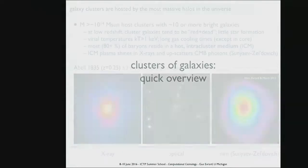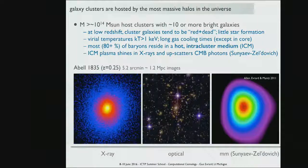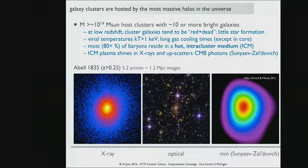A brief overview of clusters. This set of images is from a review I wrote with Steve Allen and Adam Mantz in 2011 in the Annual Reviews of Astronomy and Astrophysics. When you look at halos above 10^14 solar masses at low redshift, you see tens of very luminous galaxies — luminosity greater than or of order that of the Milky Way. Most of the baryonic material, however, doesn't get converted into stars; it remains as a plasma.